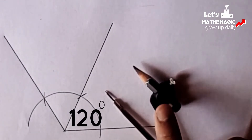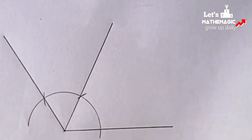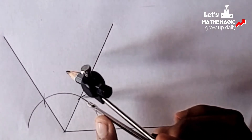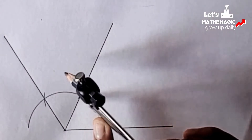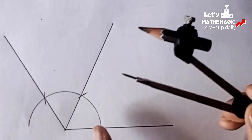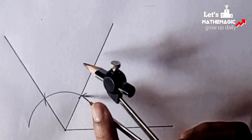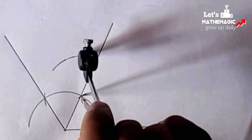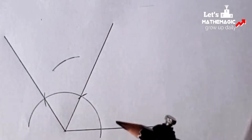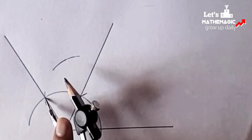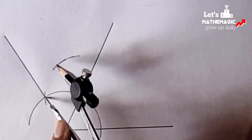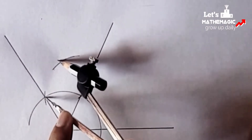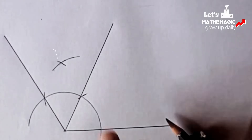Now we will make 90 degrees. Keeping the compass measurement the same, we put the compass pin to the intersection point of the first arc and the second arc and made a new arc. Then we go to the left intersection point and make another arc so that it intersects the previous arc. We have got a new intersection point.